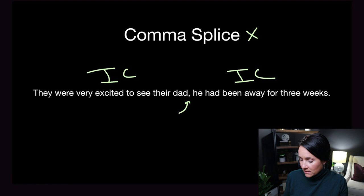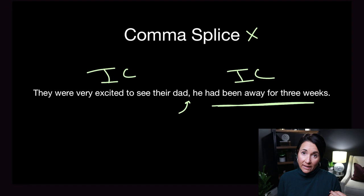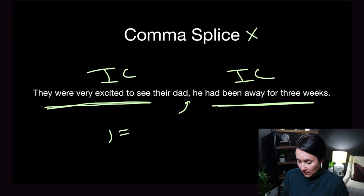So we have an independent clause on each side. An independent clause is something that can stand on its own. 'They were very excited to see their dad' — they is the subject, were very excited is the predicate, and you could put a period there. 'He had been away for three weeks' — he is the subject, had been away is the predicate. Both sides are independent clauses, and the comma alone is weak. It cannot separate two independent clauses.